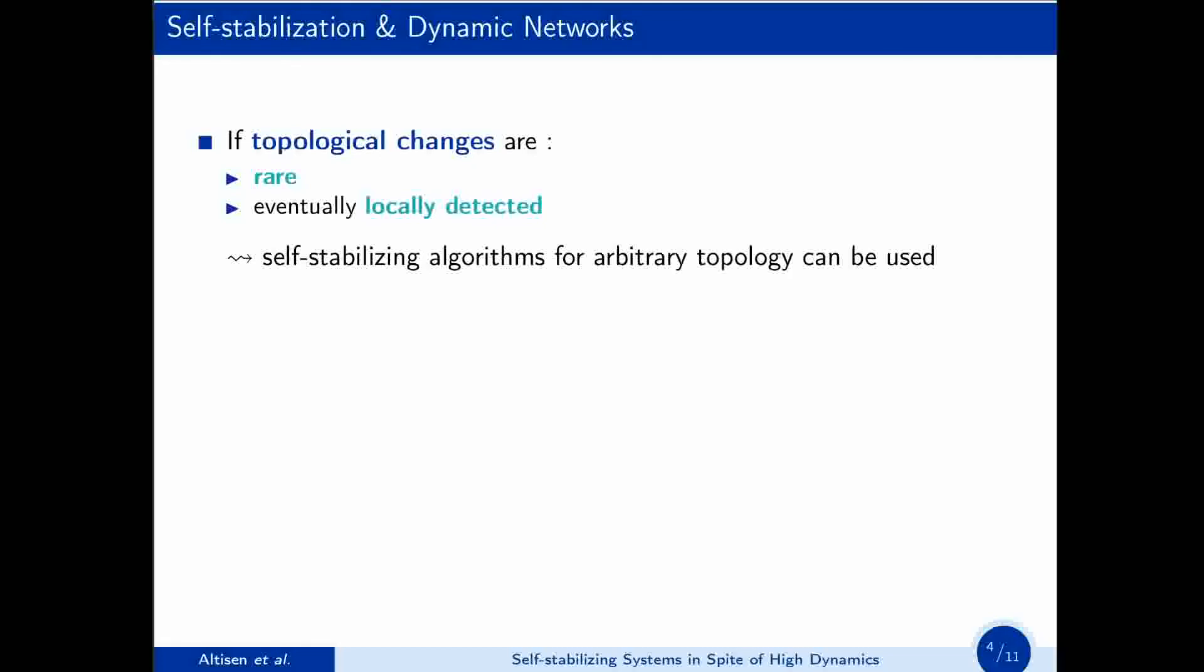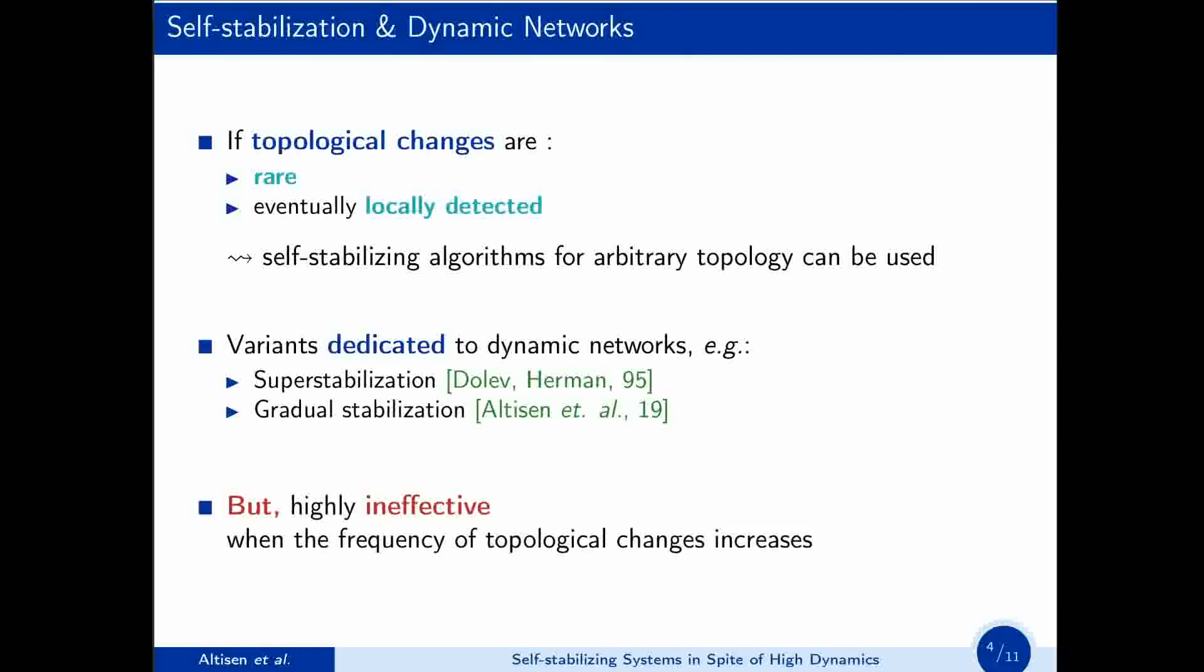Actually, this is the argument that is sometimes used to claim that a self-stabilizing algorithm is suited for dynamic networks. Some variants of self-stabilization have also been proposed, especially for dynamic networks, such as super-stabilization and gradual-stabilization. However, this works only if you have few topological changes, if those changes are geographically and timeless sparse. But, as soon as the frequency of your topological changes increases, those solutions become highly ineffective.